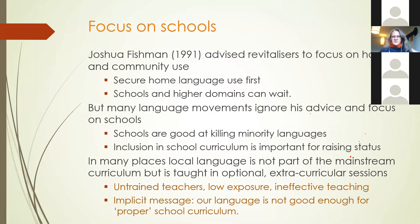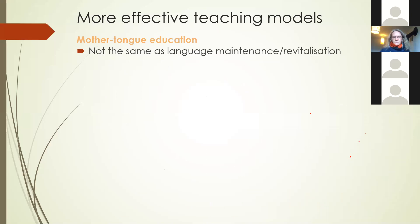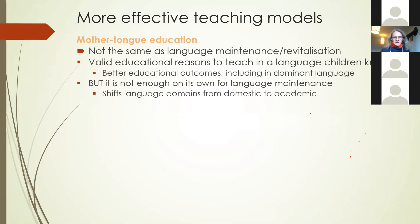More effective language teaching models include mother tongue education, but we have to be careful in assuming that mother tongue education is about language maintenance and revitalization — it is not the same thing. There are valid educational reasons to teach children in a language they understand; you get better educational outcomes. This has been known for at least 70 years, and children even do better in the dominant language if taught first through their home language. But school alone is not enough — it shifts the domains children can speak about from domestic to academic. They can talk about science, but they can't say 'I love you, let's make a baby and speak our language to it.'